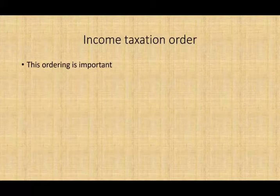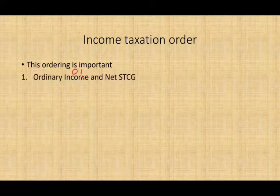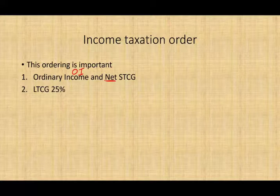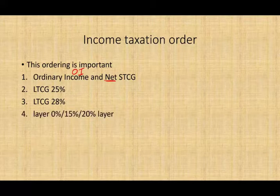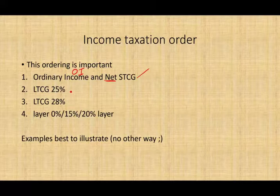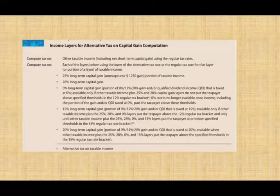Here's how we tax our income — the ordering is important. First, we tax ordinary income (OI) and net short-term capital gain. Then we tax long-term capital gain at 25%. Then long-term capital gain at 28%. The last layer is the 0%, 15%, and 20% layer. There's no way to explain this without working an example. In your textbook it may look more complex, but it's the same thing summarized here.